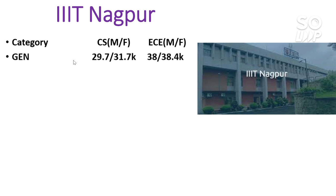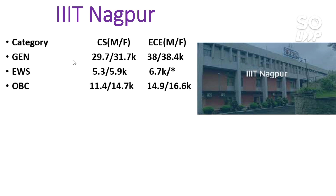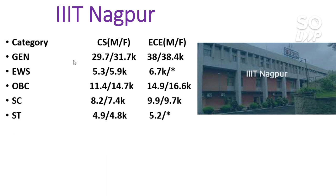Next is IIIT Nagpur. Here the cutoff is category-wise with separate male and female figures. I will discuss male cutoff; female cutoff follows after the slash. For General — CS 29,700 and EC 38,000. For EWS — CS 5,300 and EC 6,700. For OBC — CS 11,400 and EC 14,900. For SC — CS 8,200 and EC 9,900. For ST — CS 4,900 and EC 5,200. All are category ranks.